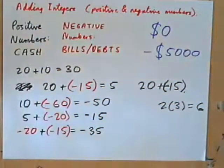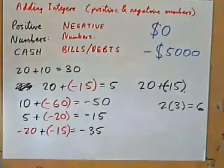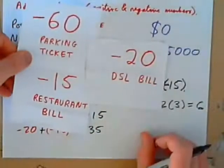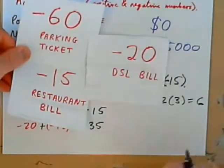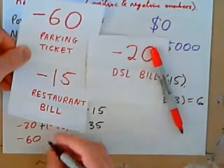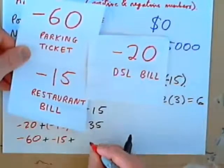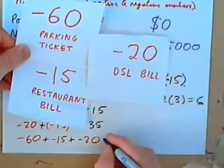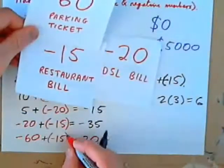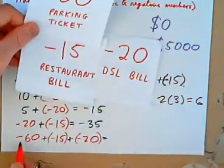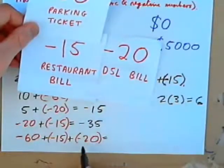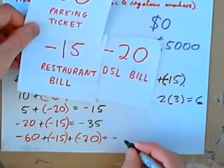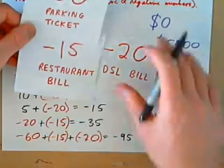So, what if you had the parking ticket, the restaurant bill, and the DSL bill all in your hand at the same time? What would that be? Well, that's a bill of $60 plus a bill of $15 plus a bill of $20. Write down how much money that would make. And again, put parentheses around your negatives here. Don't need parentheses for this one because it's on the outside, on the very left. That's 60 negatives, and 15 negatives, that's 75 negatives, and 20 negatives, that's 95 negatives. Negative 95. That makes sense, doesn't it? So, we have the idea.